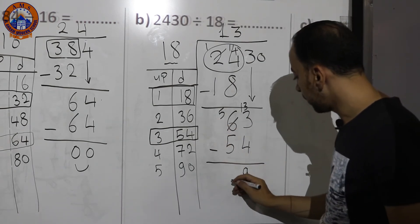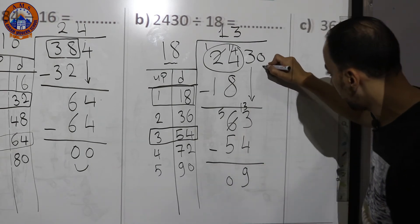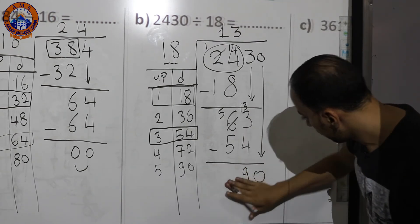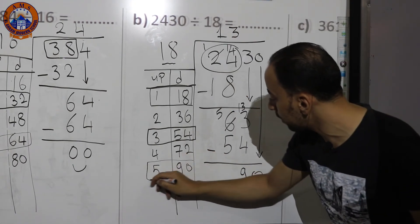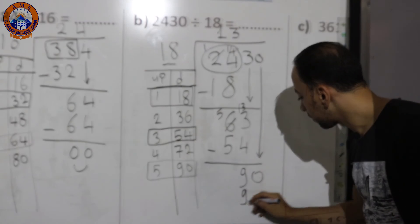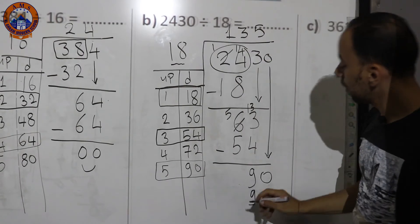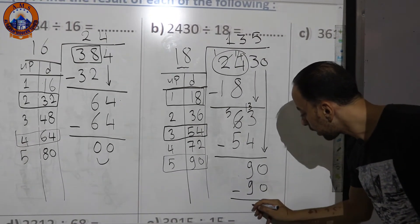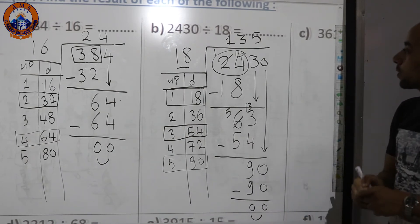Bring down the next digit 0, giving 90. Search the table — here is 90. Put 90 down and 5 up. Subtract: 0−0=0, 9−9=0. The answer of 2430 divided by 18 is 135.